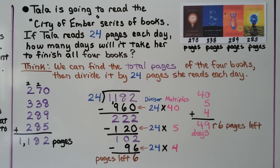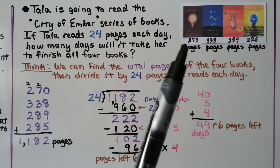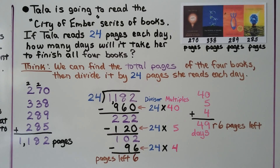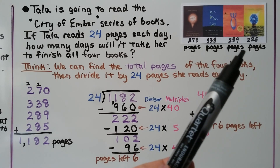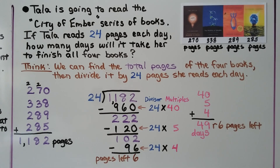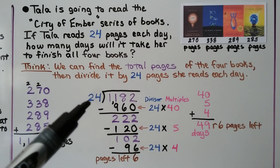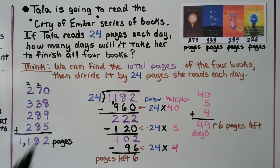Tala is going to read the City of Ember series of books. If Tala reads 24 pages each day, how many days will it take her to finish all 4 books? City of Ember has 270 pages, The People of Sparks has 338 pages, The Prophet of Yonwood has 289 pages, and The Diamond of Darkhold has 285 pages. We find the total pages of the 4 books — 1,182 pages — then divide by 24.